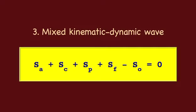A mixed kinematic-dynamic wave is represented by the balance of all slopes; no slope is neglected in a mixed wave. A dynamic wave is represented by the balance of local inertia, convective inertia, and pressure gradient slopes; all other slopes are neglected.